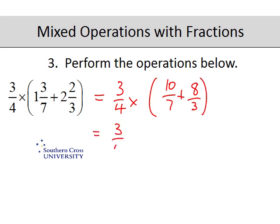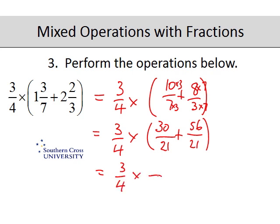So that becomes three-quarters times by... Now inside the brackets here we need to go for a common denominator of twenty-one. So that's times by three. So the ten has to be times by three to get thirty. And three was times by seven so eight has to be times by seven which is fifty-six. So this is now three-quarters multiplied by thirty plus fifty-six is eighty-six over twenty-one.